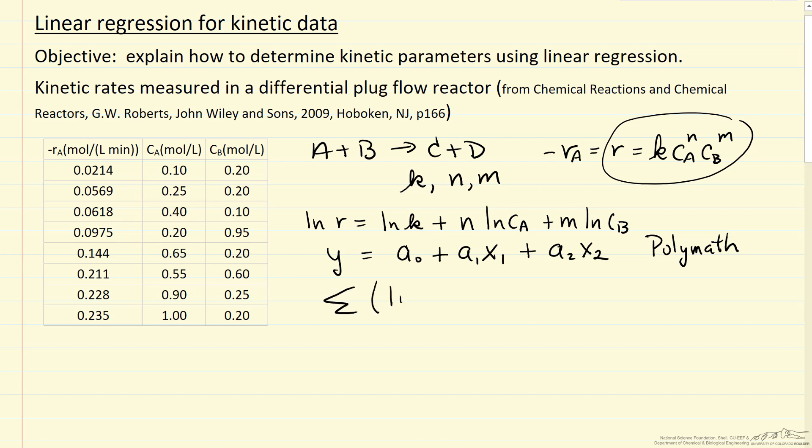is the sum of the squares is the difference between the log of the rate experimental, that's what's in the table here, minus the log of the rate calculated from our model for the best fit parameters squared, and that's what we're trying to minimize. So this is referred to as the sum of the residuals squared.